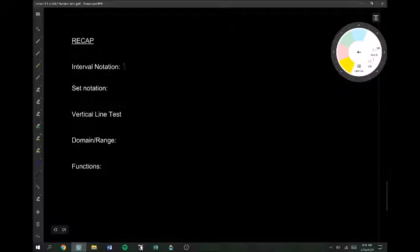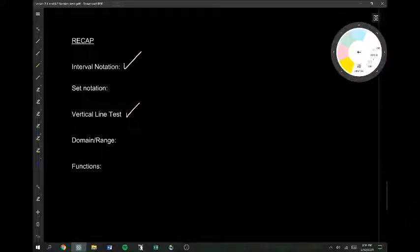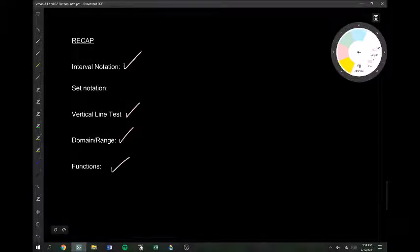Okay. So, we've got interval notation. We've got the vertical line test where you can see if a function is a function, if it passes the vertical line test. Domain and range functions. We'll save this one for next time. Okay. Well done.